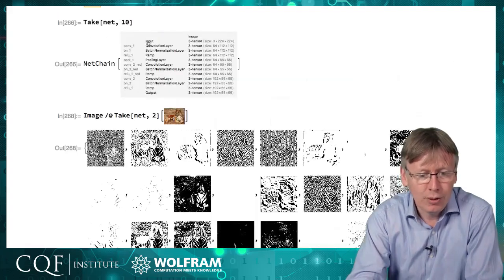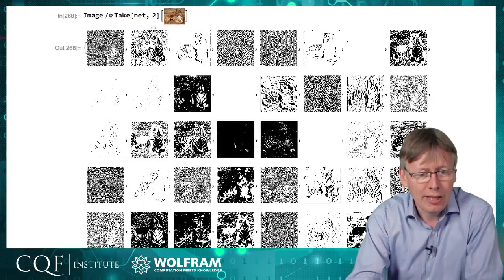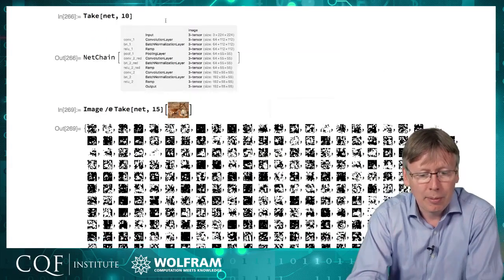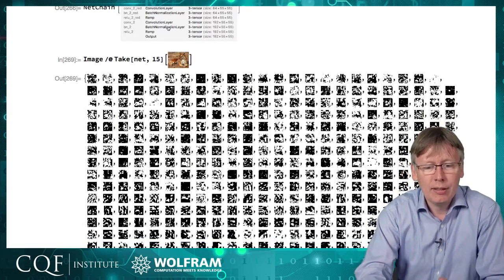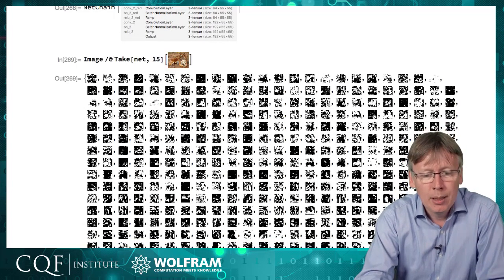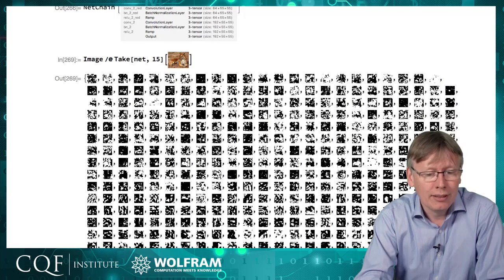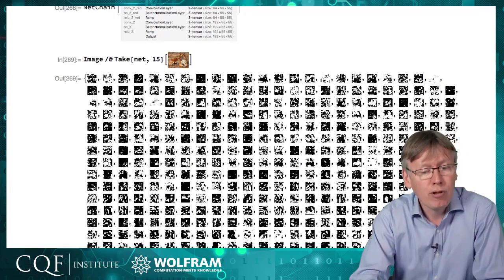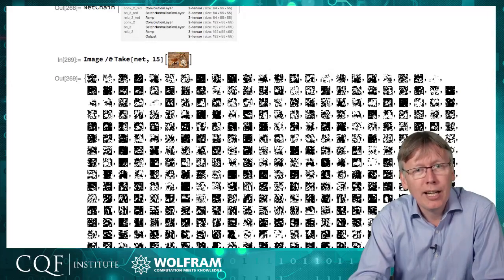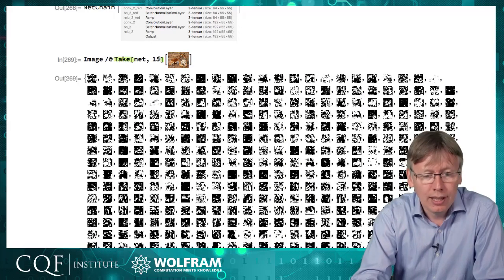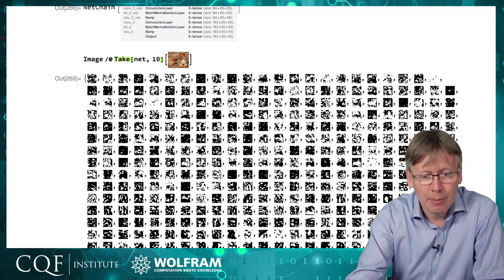That maybe at layer two it's doing some basic transformations, but by layer fifteen or so maybe things are starting to become a bit more abstract and it's no longer possible to see these as images, but maybe these start representing concepts or key features that are going on. So it's possible to start tracing through the network which neurons are dying out and becoming uninvolved in a particular image and which are doing something useful and lighting up and being excited.